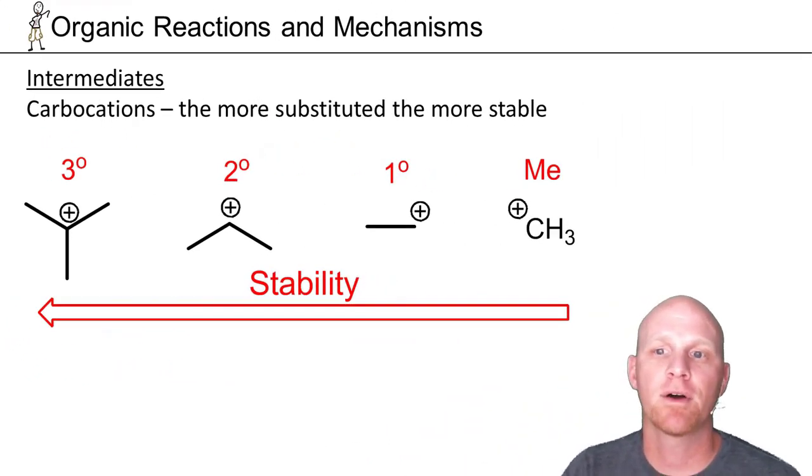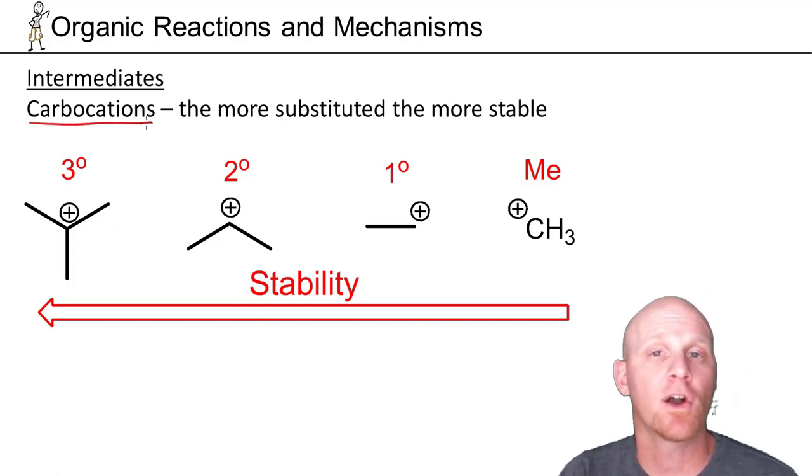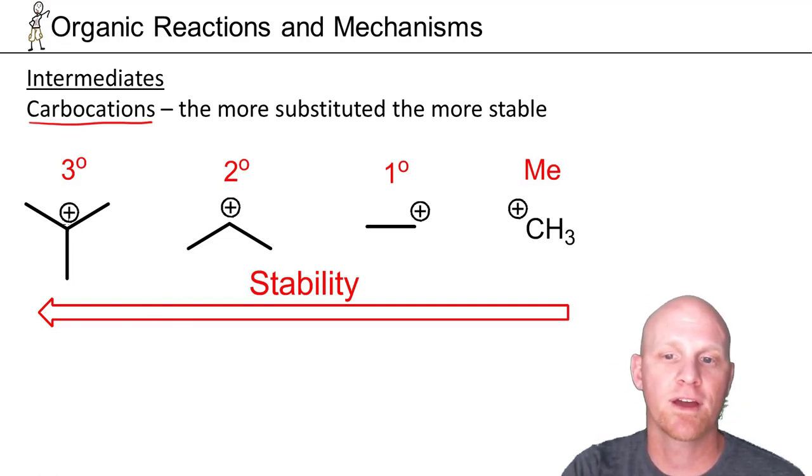I want to take some time and talk about common intermediates in organic reactions. Carbocations is a positive charge on a carbon atom, hence the name carbocation. A carbocation is a common intermediate we'll encounter, especially in this first semester of organic chemistry. The more substituted the carbocation, the more stable.